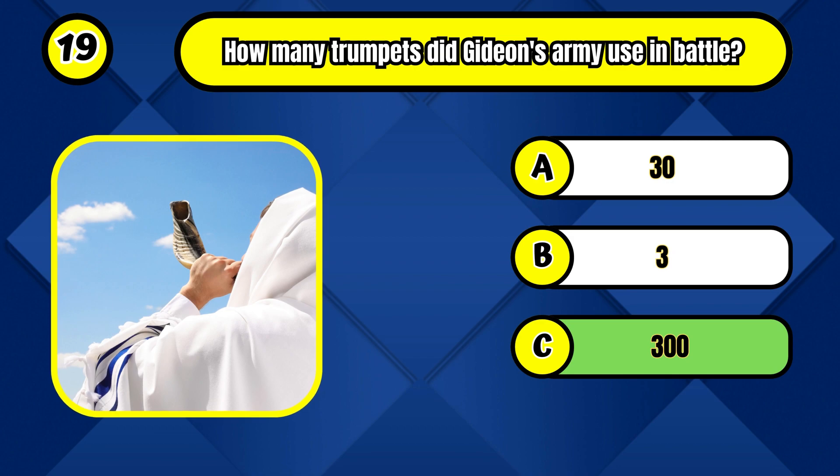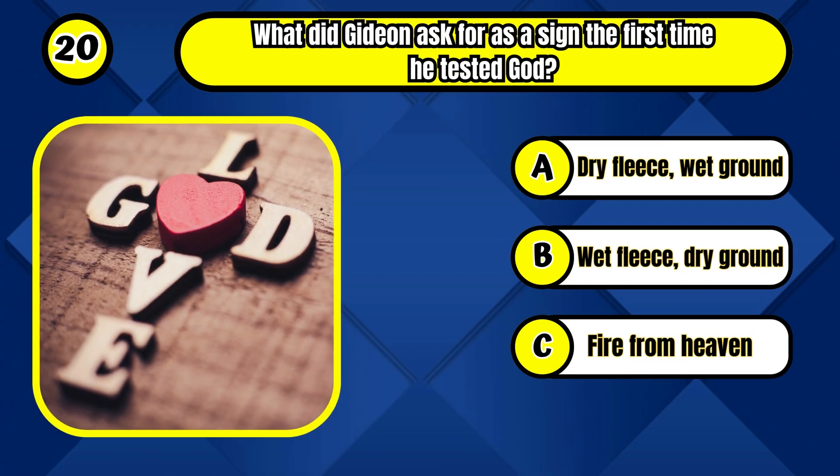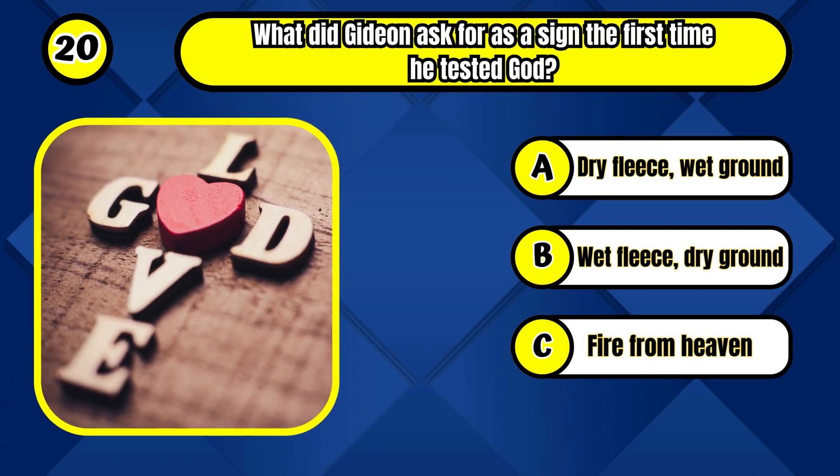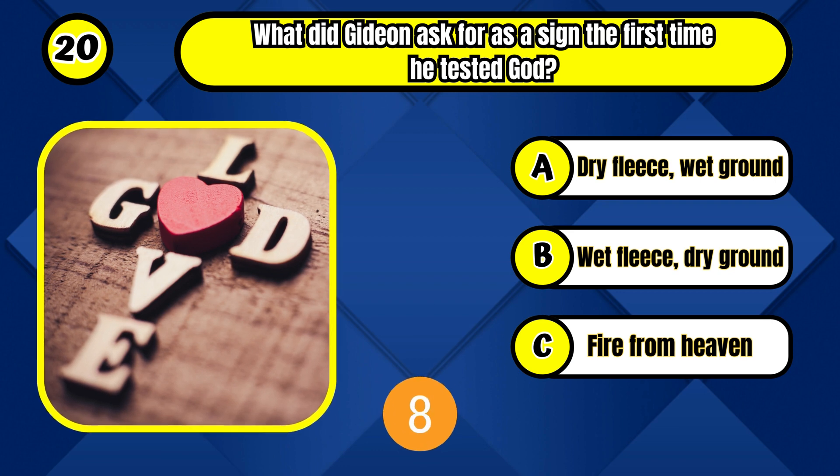300. What did Gideon request as a sign during his initial test of God? Dry fleece, wet ground.